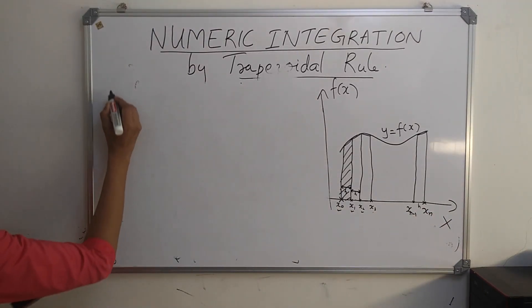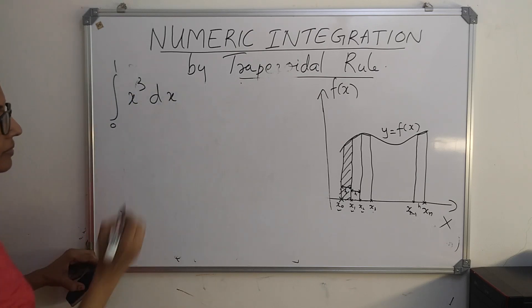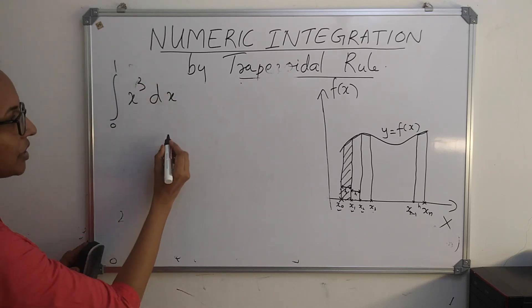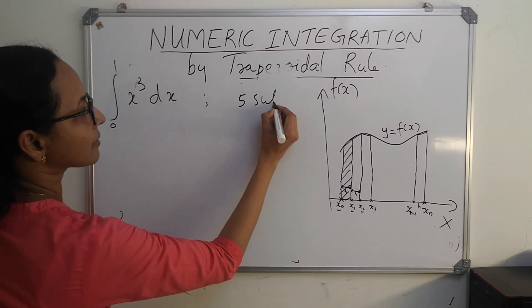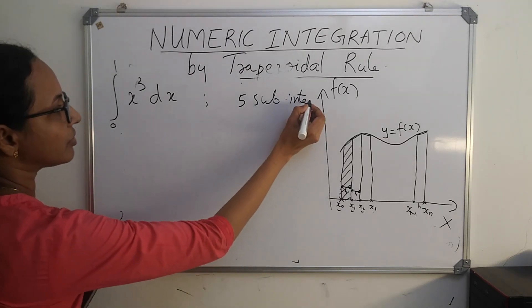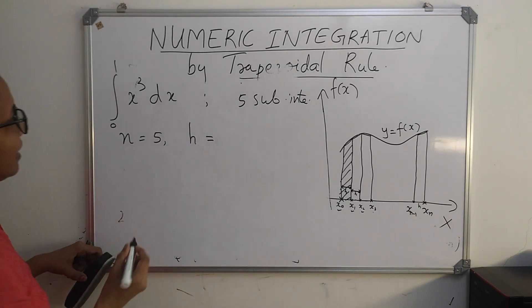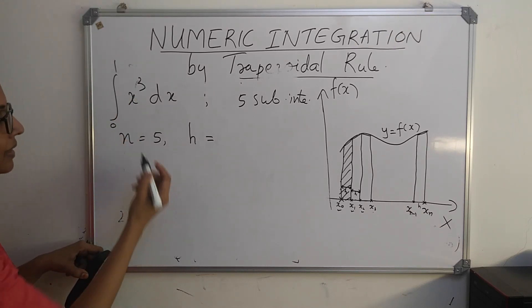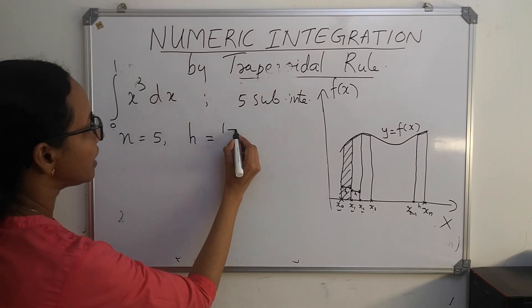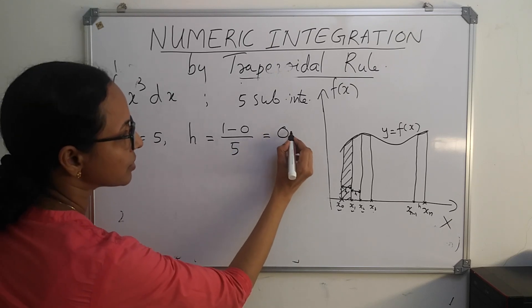Suppose we have to integrate x³ from 0 to 1. I am going to divide the interval 0 to 1 into 5 subintervals, so n = 5. Therefore, h = (xₙ - x₀) / n = (1 - 0) / 5 = 1/5 = 0.2. Our f(x) is x³.